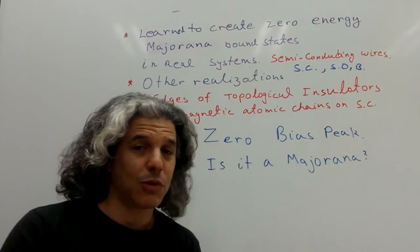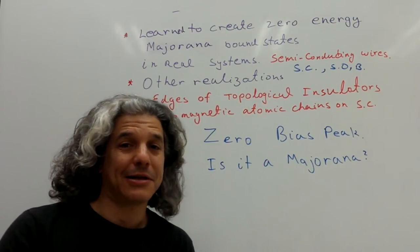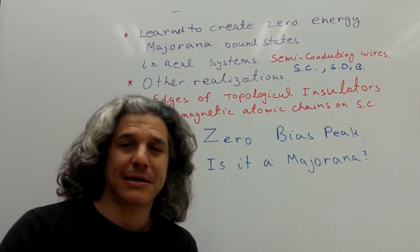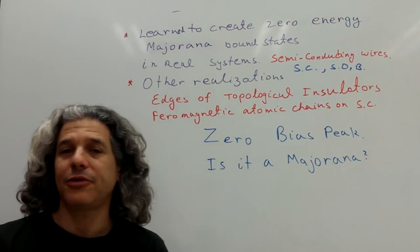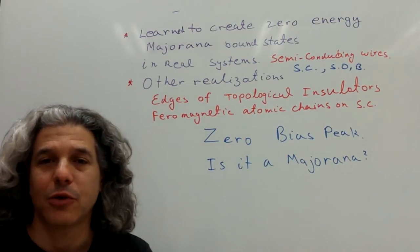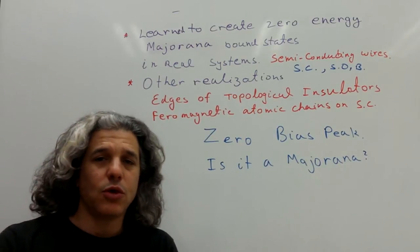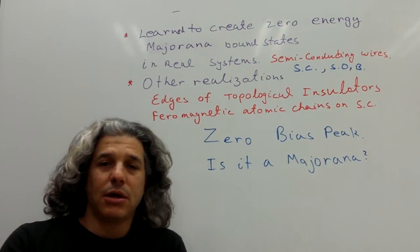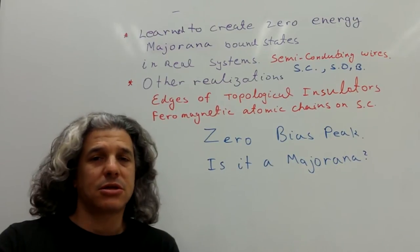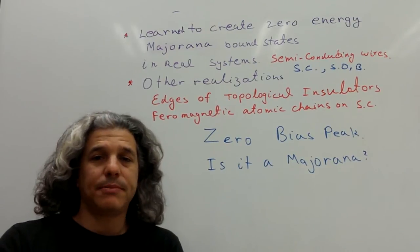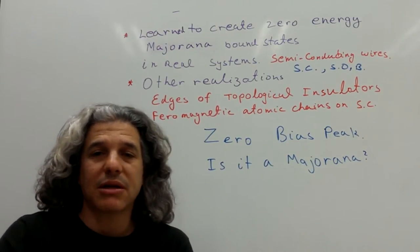The question we want to investigate is whether this zero bias peak is really a Majorana, or whether there is a different reason for observing it. When you look carefully at the model we have already described, it has many predictions — for example, that the Majorana peak should disappear when you rotate the magnetic field.